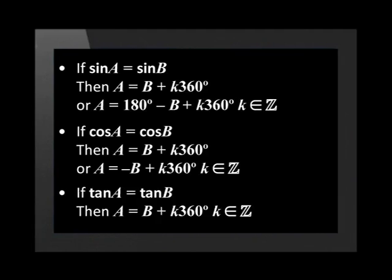If tan a is equal to tan b, then a equals b plus k times 360 degrees. Remember that we can apply co-functions to all of these rules.